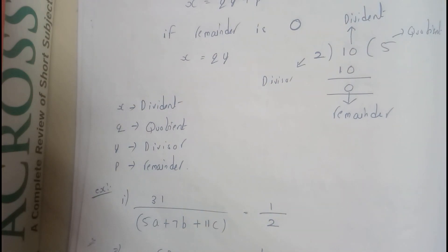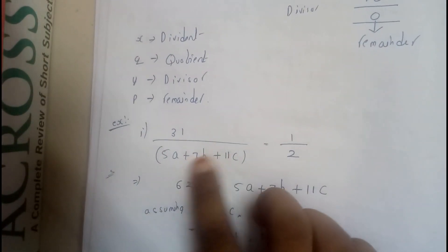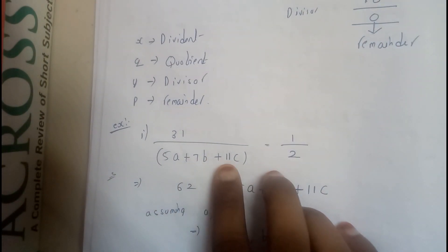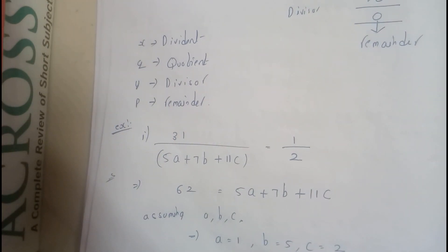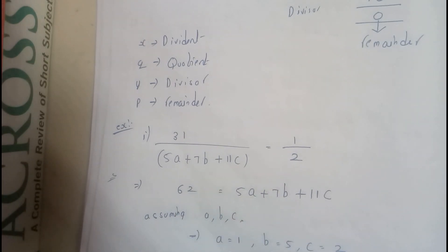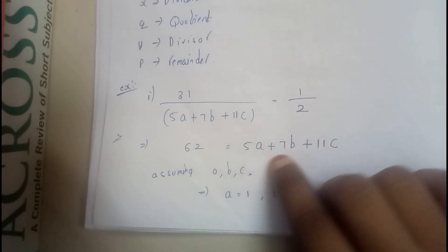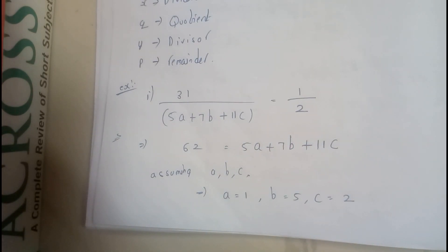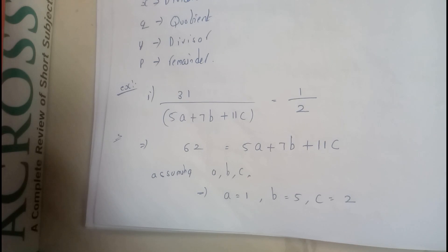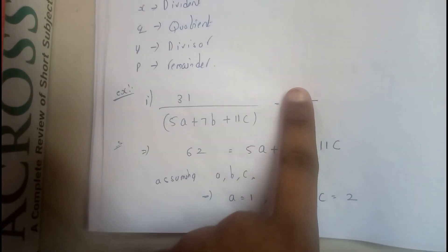These are all the things that you should just have an idea on. So there may be questions like this: see here, 31 equals 5a plus 7b plus 11c. We need to find the values of a, b, c. So I'll be cross multiplying so that I get 62 equals 5a plus 7b plus 11c. Just by observing, you need to try to guess the numbers of a, b, and c. That should be a random guess.